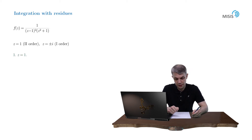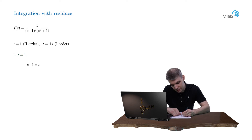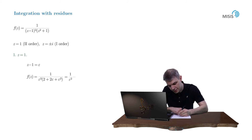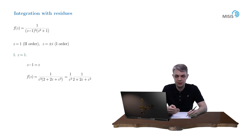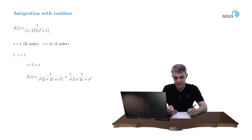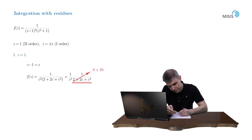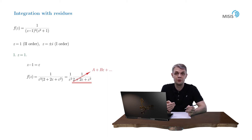First, let's find the residue at z = 1. We introduce a change of variables: z − 1 = ε, and expand in ε. So f(z) = 1/(ε²(2 + 2ε + ε²)). We rewrite as (1/ε²) · 1/(2 + 2ε + ε²). We are hunting for the 1/ε term. We have a pre-factor 1/ε², multiplied by an expression Taylor-expandable in ε. We only need first-order terms in ε, so we can drop the ε² term in the denominator.